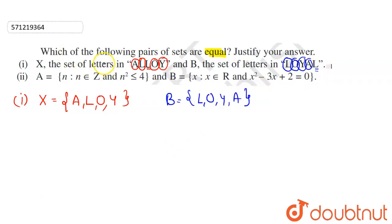So basically, two sets are said to be equal if they both have exactly same elements, irrespective of the order. So here you can see that A is present here in both, L is also present in both, O is also present in both, and Y is also present in both of the sets. So that means X is equal to B, and the number of elements are also 4. So that means X is equal to B.